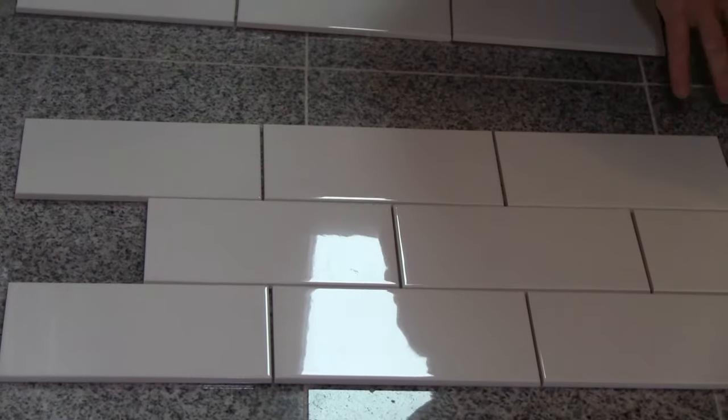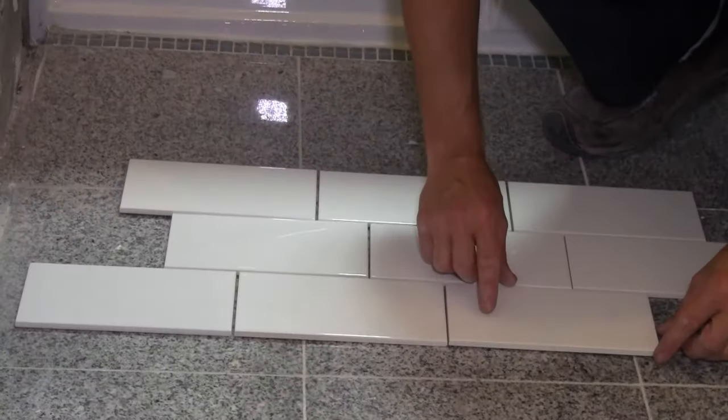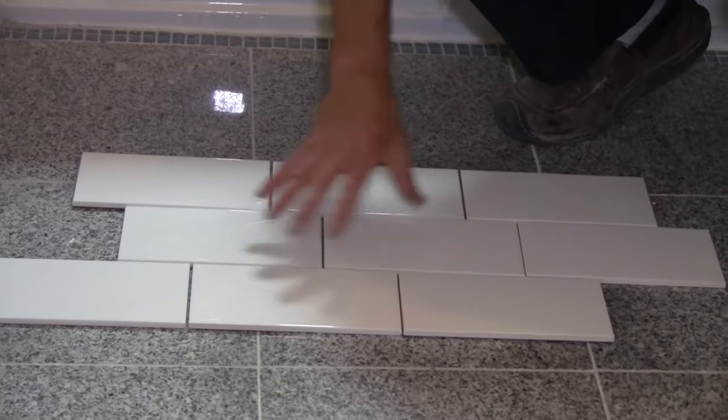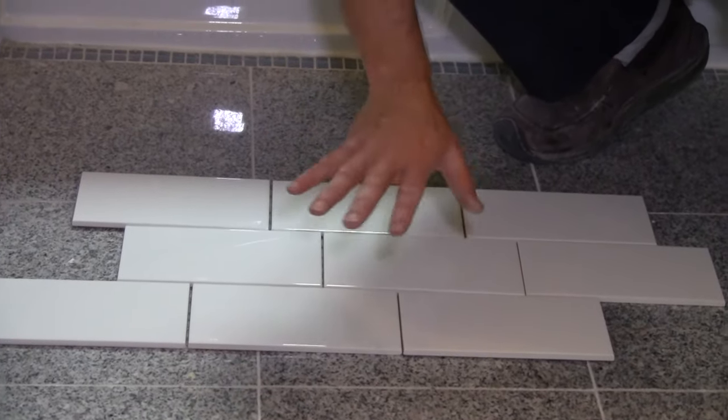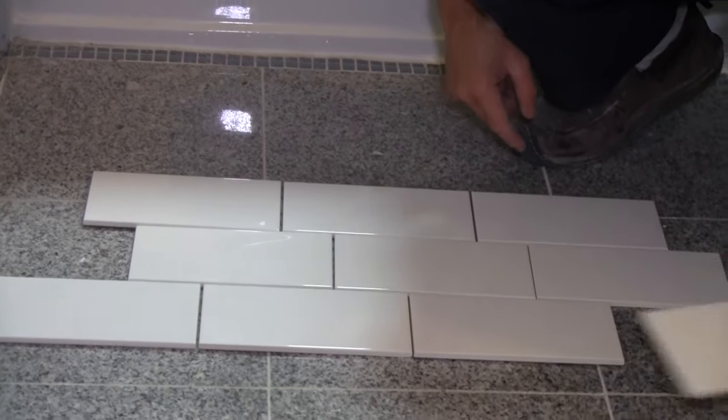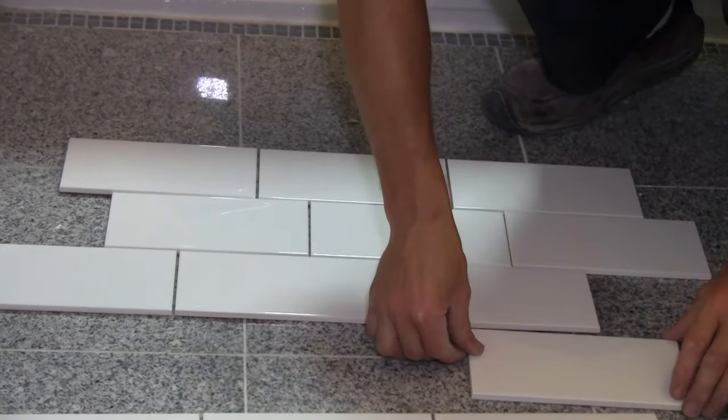Now when you get into larger tiles, this particular third staggered works really well. On the smaller tiles, I wouldn't say quite as much, but you can see you have the step pattern. Then every third, so if you have another row here...